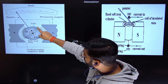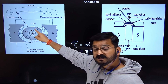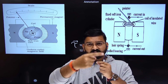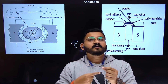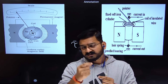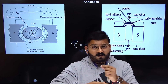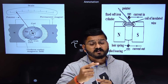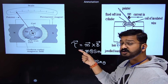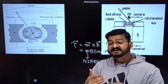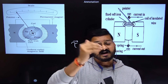Over the soft iron core, a coil is wound. If you increase the number of turns N of the coil over the soft iron core, N increases and therefore torque increases. This means the sensitivity of the galvanometer will be very high.